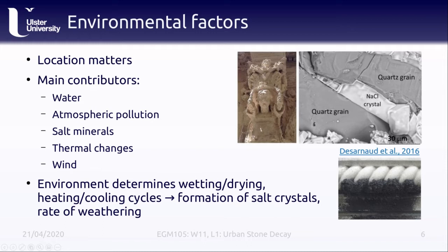As in real estate, location matters a great deal. The main contributors to weathering in an urban environment, much as in the natural environment, are water, contaminants or pollutants in the atmosphere, salts, thermal changes, and wind. Water and atmospheric pollution combine to form salt crystals, which can physically and mechanically change the composition of rocks. These crystals form via evaporation, which is heavily influenced by the amount of water available, solar insolation, temperature, and wind. Each of these different processes can play off of each other to help break down rocks and stoneworks over time.